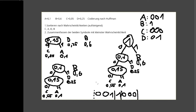Die Idee dahinter: Symbole die häufiger vorkommen, bekommen möglichst kurze Bitketten. Das erinnert an UTF-8, wo ASCII-Zeichen mit 1 Byte auskommen – damit können die meisten Zeichen effizienter kodiert werden.